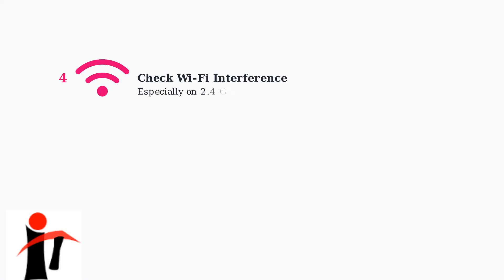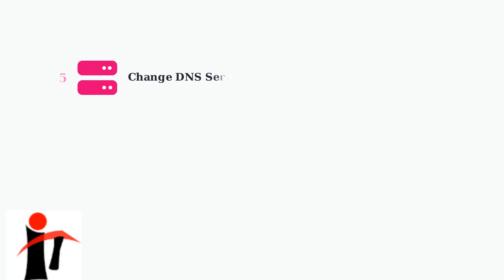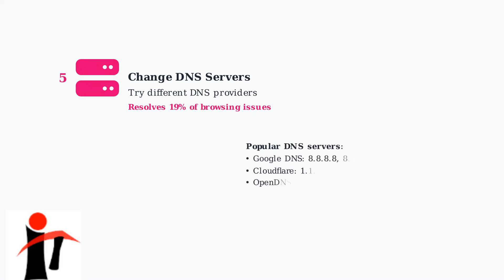Fourth, check for Wi-Fi interference, especially on the 2.4 GHz band. Other devices like microwaves, baby monitors, and neighboring Wi-Fi networks can cause connectivity problems. Fifth, try changing your DNS servers. Switch to public DNS providers like Google DNS or Cloudflare DNS. This resolves browsing issues in about 19% of cases.